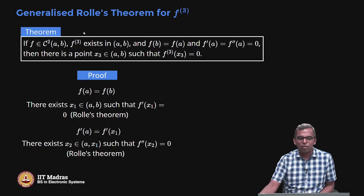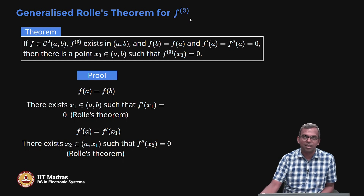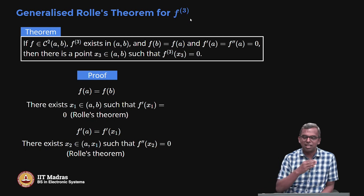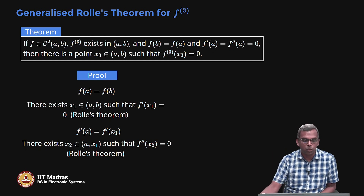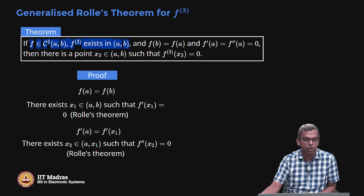We are going to first do a generalized Rolle's theorem for F3. We needed a generalized Rolle's theorem for F double prime, and now we are going to see a generalized Rolle's theorem for F3. We are going to select a smooth enough function — it needs to belong to C2 of [A,B], meaning F is differentiable twice and the second derivative is continuous.